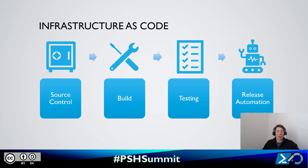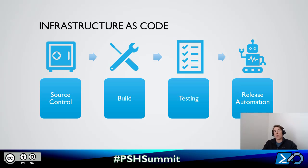Infrastructure as Code is kind of an organizational culture. We can't just say 'I heard this at a presentation, we're going to do Infrastructure as Code.' The best way to do this is to find a small project, run it as a proof of concept, work through your pipeline and how it's going to work, and then expand on it from there.